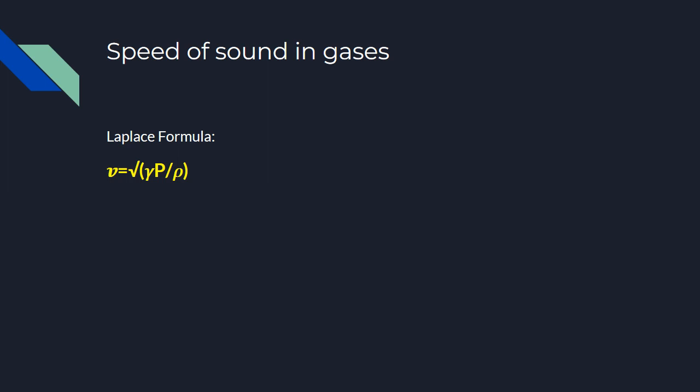So in this case, the speed of sound in gas is varying only based on the adiabatic constant. This formula is from the chapter on waves.